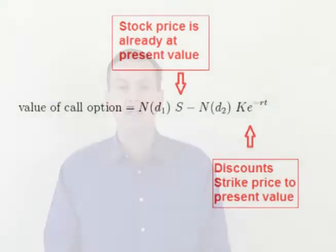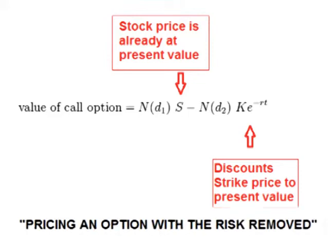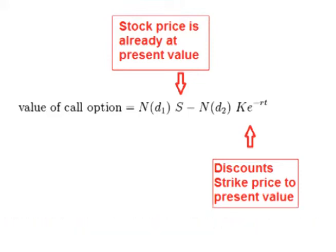The time value of money is used in many areas such as lottery winnings. Many lotteries offer a choice of 20 yearly payments or a cash equivalent today. The cash equivalent is the future payments discounted to today's value. In the Black-Scholes formula, option values are discounted to the present value to find out what the current value of the option is. The formula visually suggests that only the strike price is discounted instead of the future value of the option. However, in my last video, I showed that this is because the stock price is already at present value.